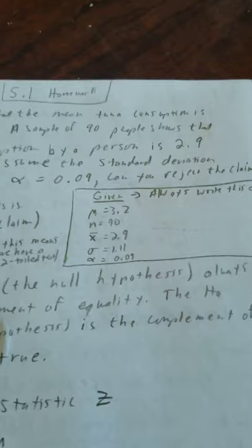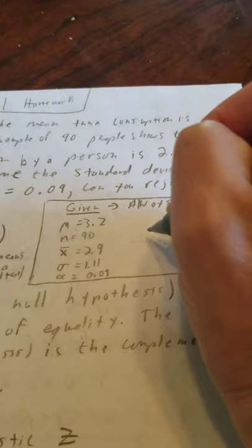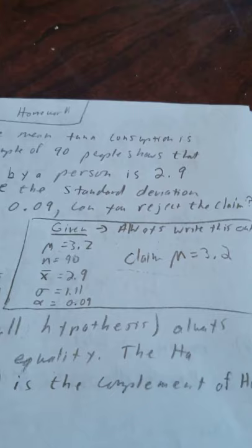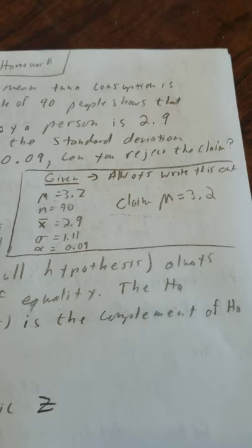Now what else does it give us? It tells us what the claim is. I always like to write that as well and I have it, so I'm going to do that right now. My claim is mu is 3.2.